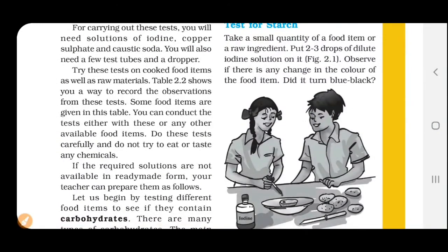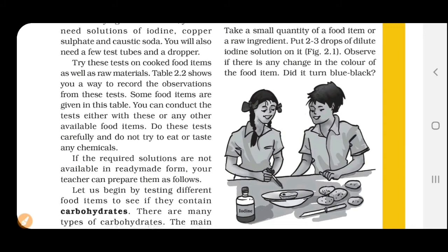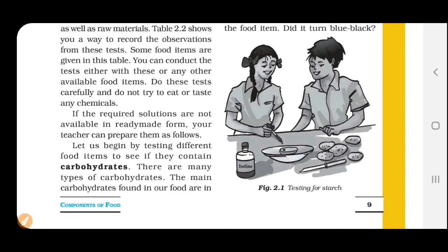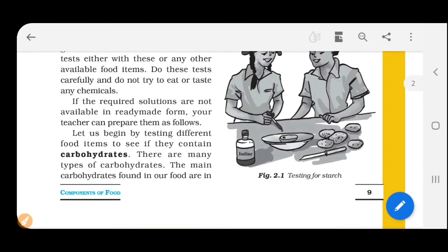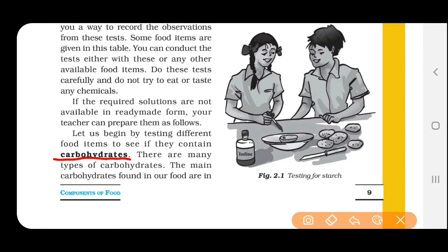So let us start the test for carbohydrates. Try this test on cooked food items as well as raw materials. Aap pakaya hua khana jo hoga usse test karna, aur raw ingredients honge - matlab jo kaccha hai, vegetables - usse hum use karenge. You can conduct the test either with these or any other available food items. Aapko yeh test bahut carefully karne hain aur uski observation record karni hai - likhni hai.